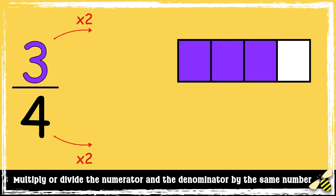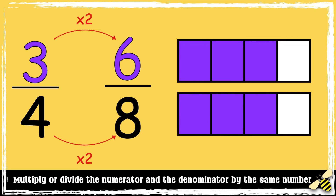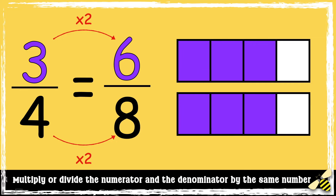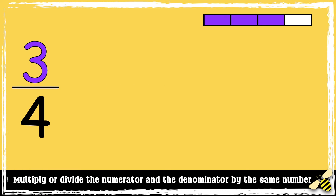Now we have 3/4. If I multiply the numerator by 2, I also have to multiply the denominator by 2. So 3 times 2 is 6, and 4 times 2 is 8 — so 3/4 is equivalent to 6/8.